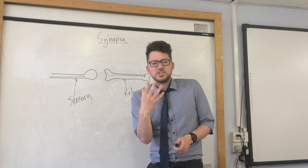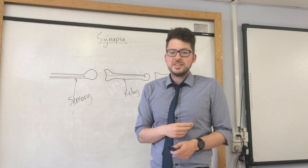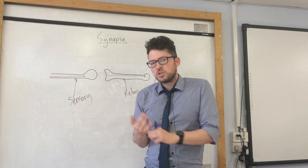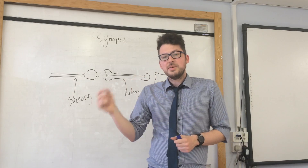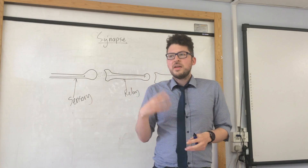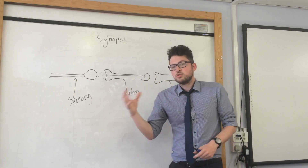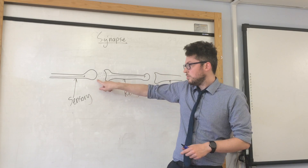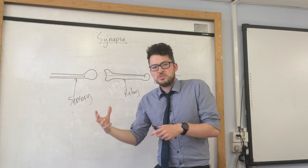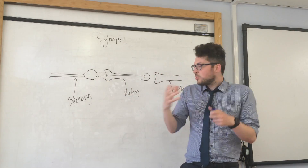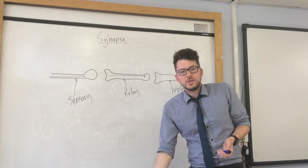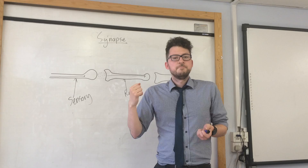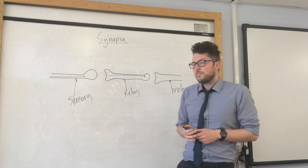Something they may ask you — I've seen it a few times in exam papers — is about the effect of drugs on this. You don't need to know any specific examples, but they may say that a specific drug increases the amount of chemical. What would that do to the response? If they increase the amount of chemical, it would increase our response, which might be to move our muscle more.